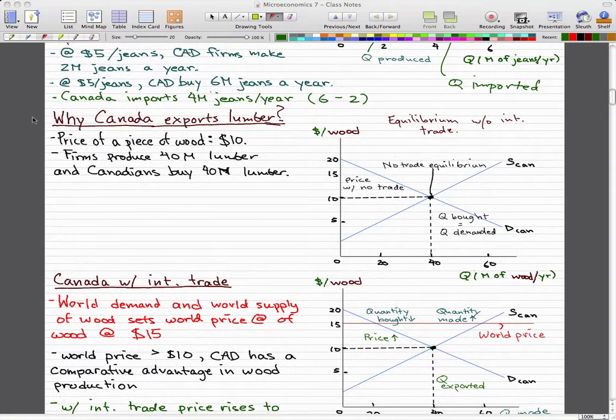Today's video, we're going to answer the question, why Canada exports lumber. From this graph, we know that a price of a piece of wood is $10, a very pricey piece of wood if I say so myself, and that's the price with no trade.